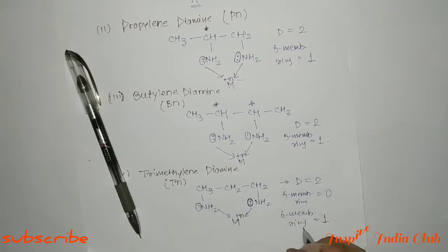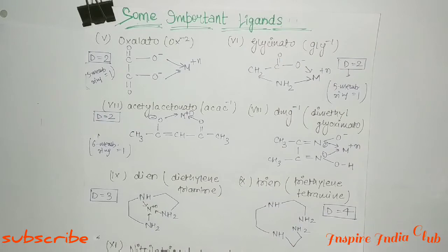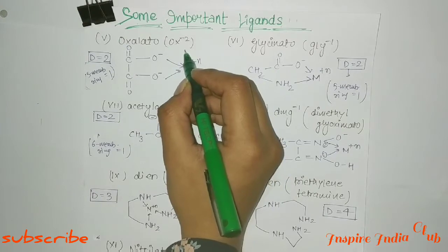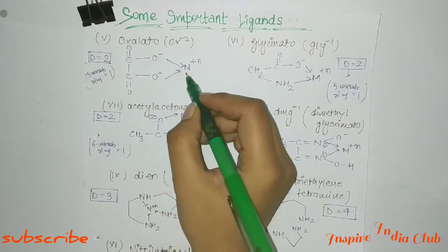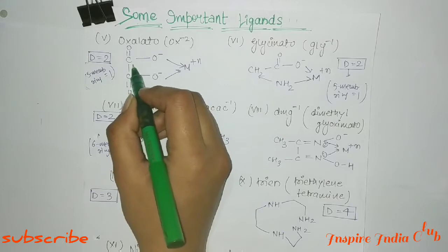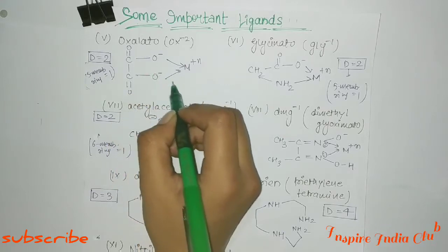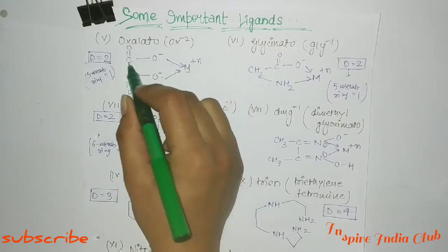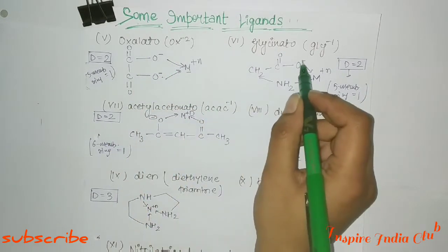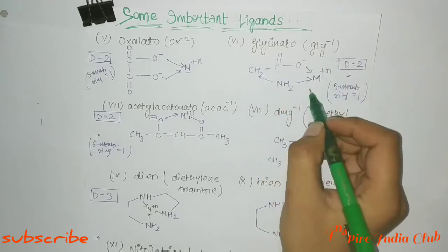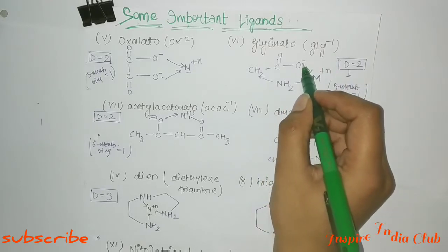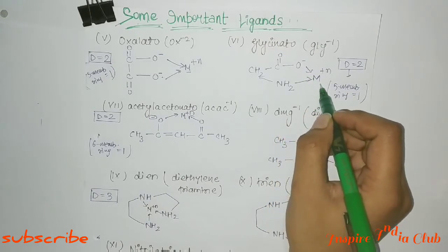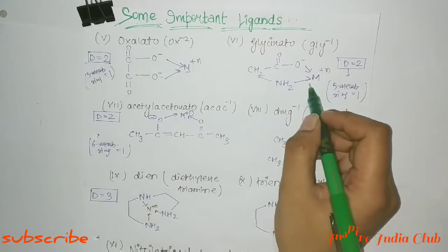Next is oxalato. Its structure is C(=O)(O⁻)-C(=O)(O⁻), where the two oxygen atoms with negative charges donate to the complex forming metal. Denticity is 2 and 5-member ring formation is 1. Next is glycinate (gly). Here one oxygen with a minus charge and the NH2 group both donate to the complex forming metal. Denticity is 2 and 5-member ring formation is 1.